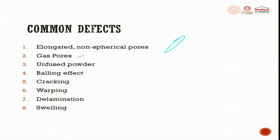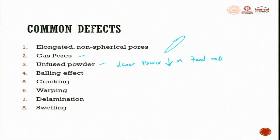Then there are gas pores - we saw two types: one is gas pores, and the other one is process induced. The next one is unfused powder. Unfused powder occurs when you choose a laser power that is too low, or your hatching speed is very high - then you get unfused powder. The next one is the balling effect.